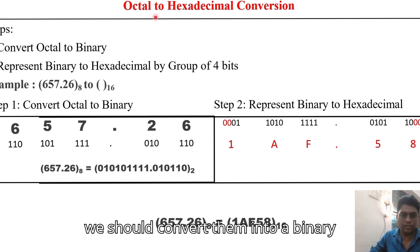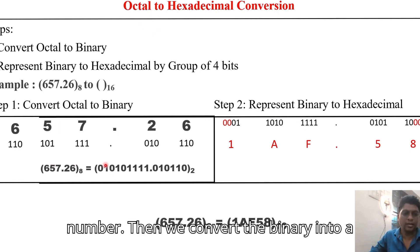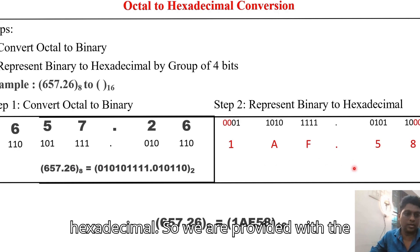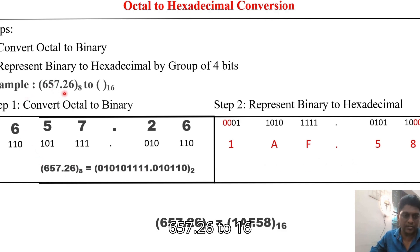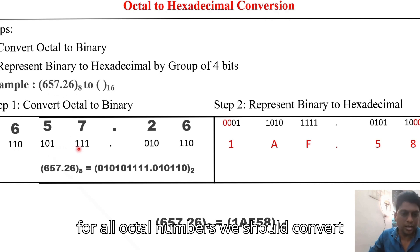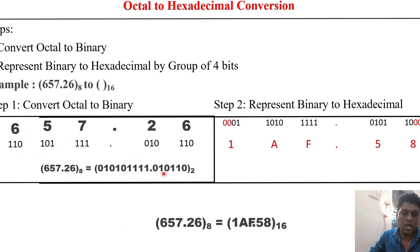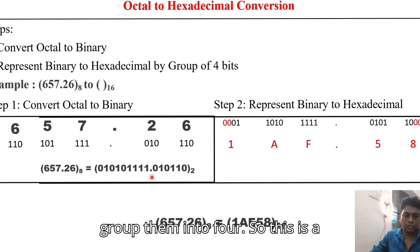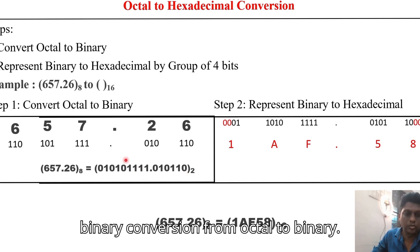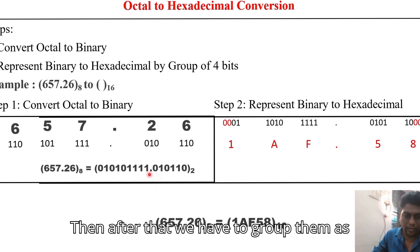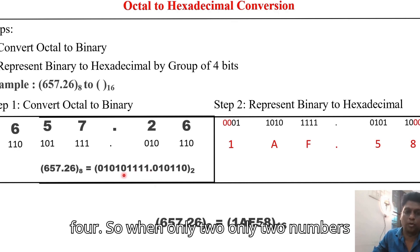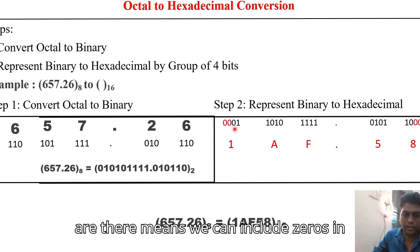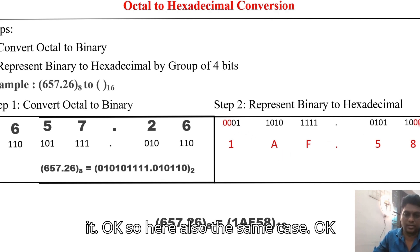For octal to hexadecimal conversion, first convert each octal digit into its 3-bit binary representation, forming the full binary number. Then regroup those bits into groups of 4 from the LSB. If a group has fewer than 4 bits, pad with zeros, then find the corresponding hexadecimal value for each group.